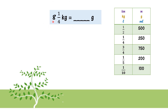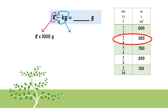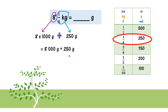Now, mixed numbers: 8 and one over four kg converted to grams. The whole number 8 means 8 kg, and one kg equals one thousand grams, so 8 kg is 8 times one thousand grams. For the fraction one over four, we refer to the table — one over four equals 250 grams. We add them: 8000 plus 250 grams equals 8250 grams.